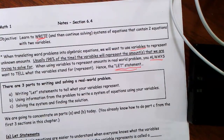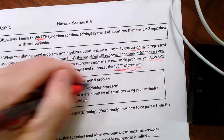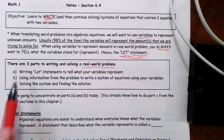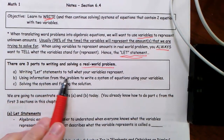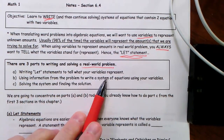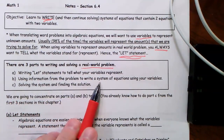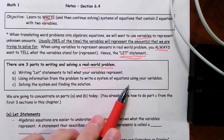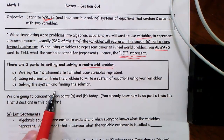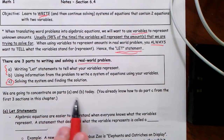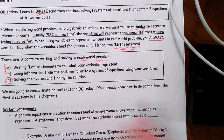When you go to solve a real-world problem, there are three parts to solving it. First, you have to write a let statement to tell what your variables represent. Part B is to use information from the problem to write a system of equations using your variables. And then Part C is to solve the system that you wrote. We've already done this part the last several days, so today we're going to concentrate on Parts A and B, because you already know how to do Part C.